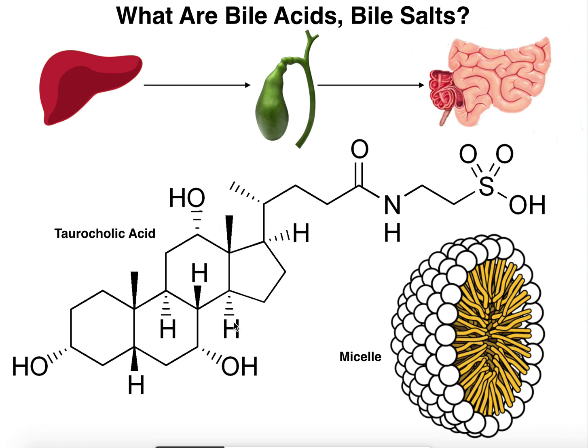These types of compounds — these bile acids — are going to be very important in the absorption and digestion of lipid substances. Let's think about the different kinds of lipid substances we can have: triglycerides and eventually fatty acids from their breakdown, phospholipids and fatty acids from their breakdown, cholesterol from the diet, and fat-soluble vitamins such as A, D, E, and K. Bile acids like taurocholic acid are going to be really important in emulsifying these fatty acids from the diet.